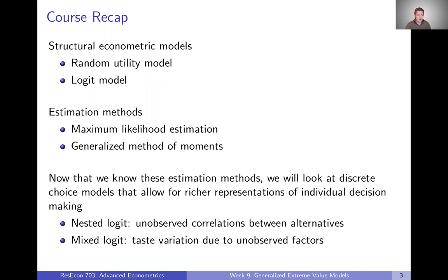We started by talking about structural econometric models — the first week we did an overview of what that even means. Then over the subsequent few weeks we talked about the random utility model to deal with discrete choice problems, and then the logit model, which is a specific example of a discrete choice model using the random utility model. Then we took a diversion to estimation methods: we talked about maximum likelihood estimation applied to the logit model, and last week we talked about the generalized method of moments, also applied to the logit model.